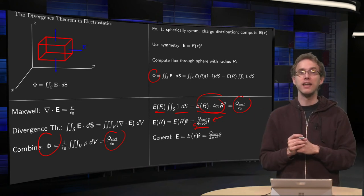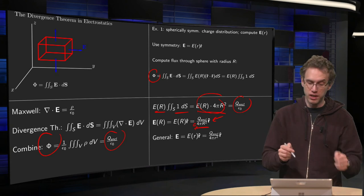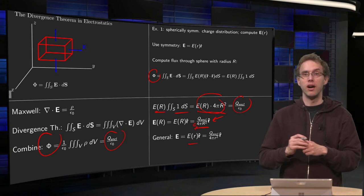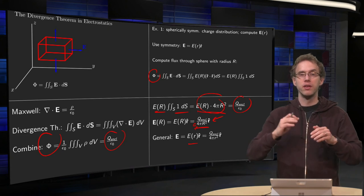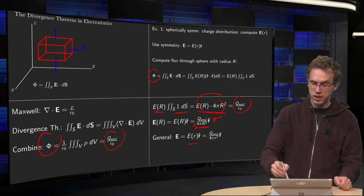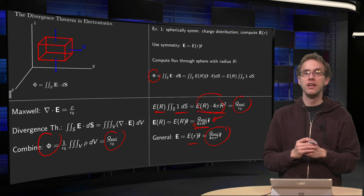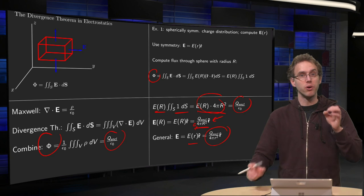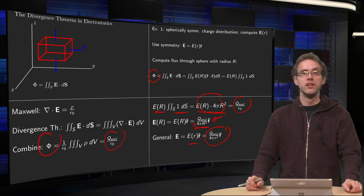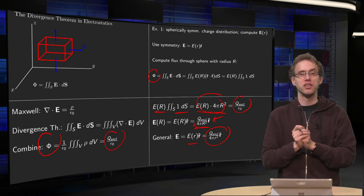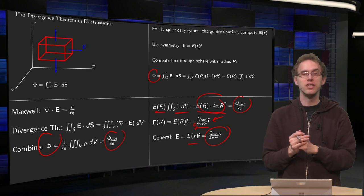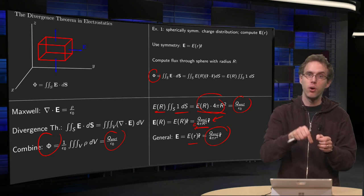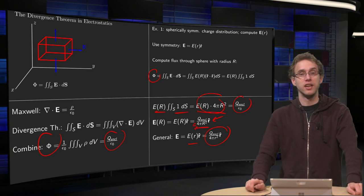Now you can do this for any capital R, so in general your electric field is a function of R, as long as you are enclosing all your charge. And you'll see that's actually exactly the same as if you would put all your charge just in the origin, so a spherically symmetric charge distribution yields the same electric field as a charge distribution where all charge is in the origin.